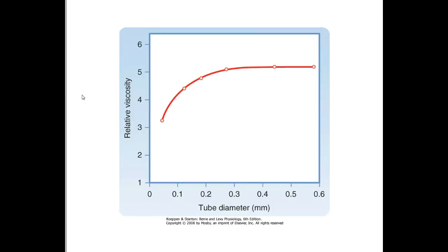They could only explain this by assuming that it had something to do with the actual diameter of the various tubes. Since the hind limb of a dog has tubes of a number of caliber, they thought they would use a viscometer and gradually decrease the diameter of the viscometer tube to see if that affected relative viscosity.